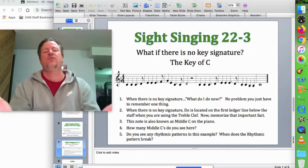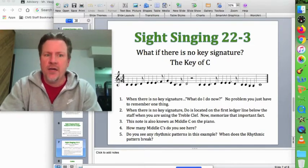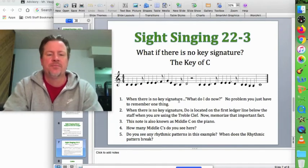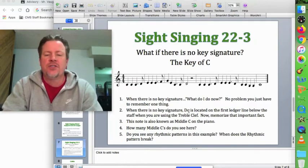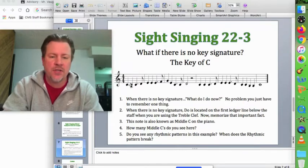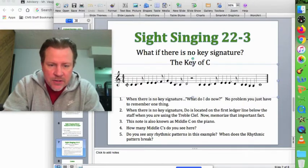So what do we do? It's actually not that hard if you can remember a couple things. When there is no key signature, DO is located on the first ledger line below the staff when you are using the treble clef. So if this is the treble clef, here's the first ledger line right there, and that note is going to be DO every time.